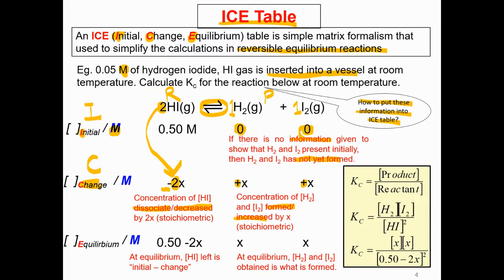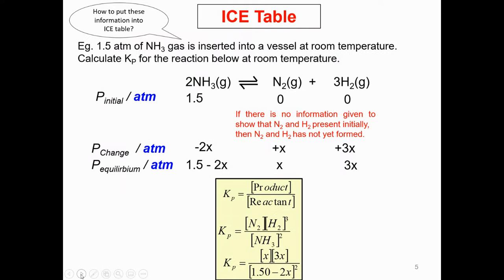After the changes, the system reaches equilibrium — that's the E row. At equilibrium, we use initial minus change, which is the leftover. So hydrogen iodide is 0.5 minus 2X at equilibrium, while hydrogen and iodine have been formed. Remember, the expression for Kc uses the concentration at equilibrium, not initial or change. Write the expression first, then substitute the equilibrium values.